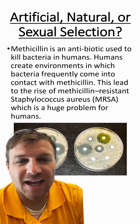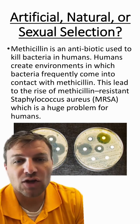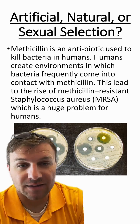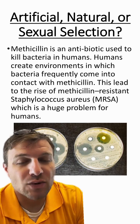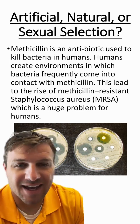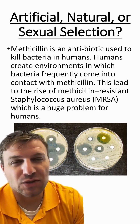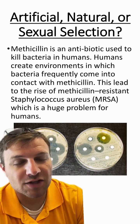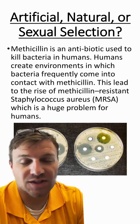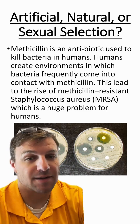And our last one. Methacycline is an antibiotic used to kill bacteria in humans. Humans create environments in which the bacteria frequently come in contact with methacycline. This leads to a rise in the antibiotic-resistant bacteria called MRSA, and these bacteria are a huge problem for humans. So is this a type of artificial, natural, or sexual selection? This is a type of natural selection, since the bacteria is evolving around this antibiotic.